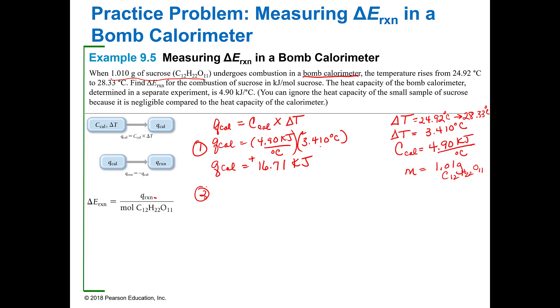Step two is so easy because we know the Q of the calorimeter is equal to the negative Q of the reaction, or you could say the Q of the reaction is equal to the negative of the Q of the cal. Either way you want to look at it, what this gives me now is that the Q of the reaction is a negative 16.71 kilojoules because it's going to be the opposite in sign but equal in magnitude of whatever my calorimeter gave me.